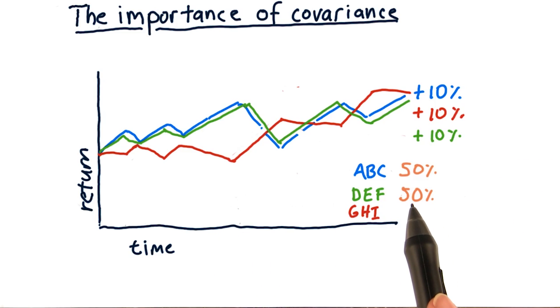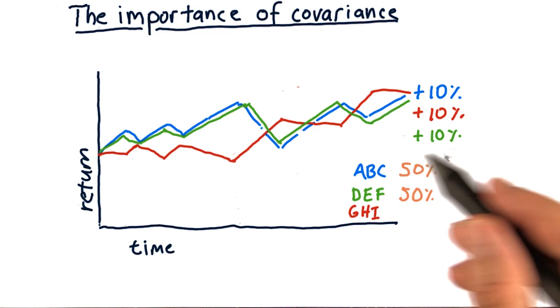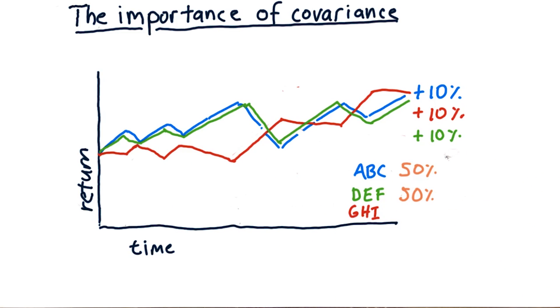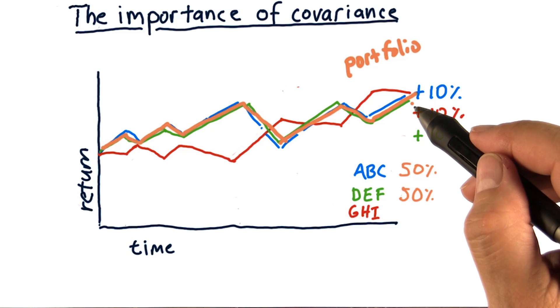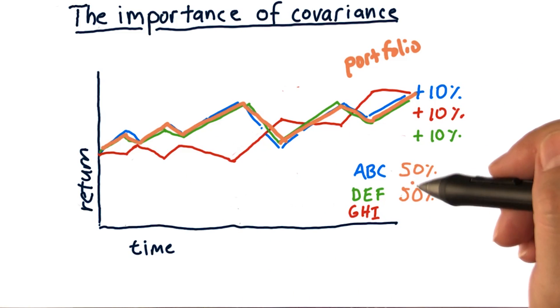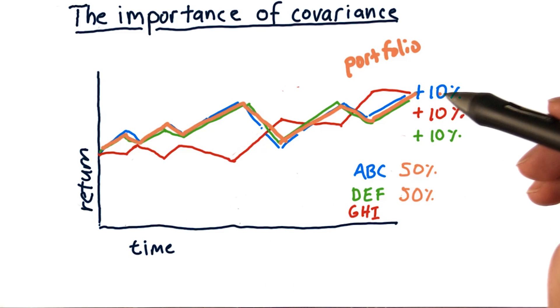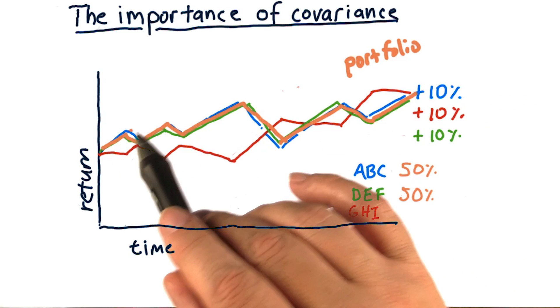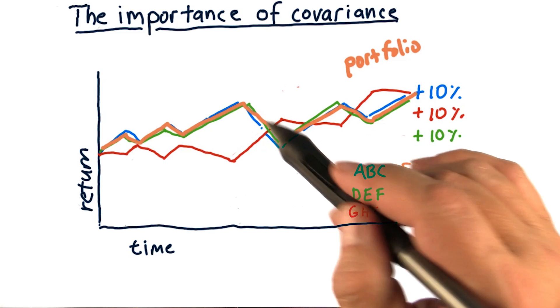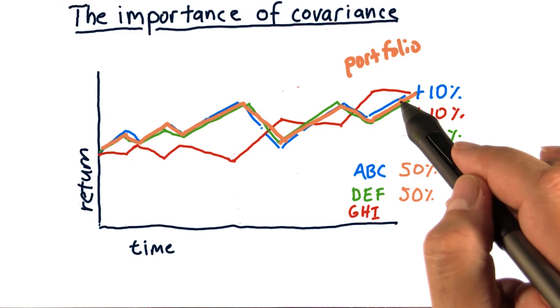They both move very similarly, so this portfolio is going to track the two of them together. The performance of this portfolio is going to look something like this. That's fine. It ends up returning 10%, just like the two major assets that it holds. But there's no real advantage in blending these two assets, because it just has the same volatility as each one of them by themselves.